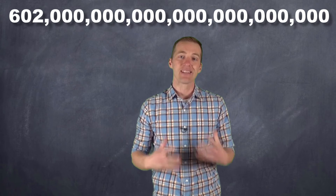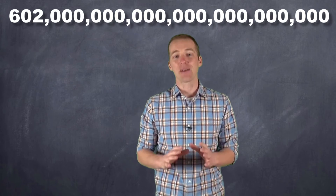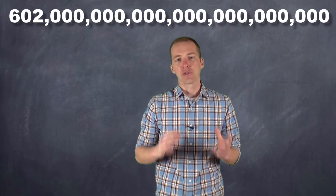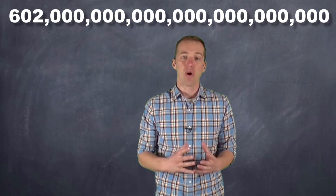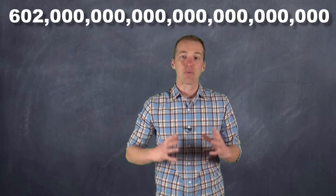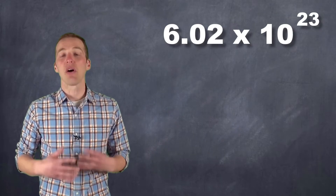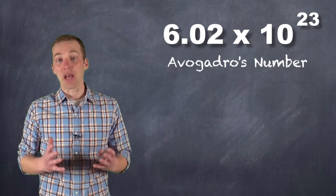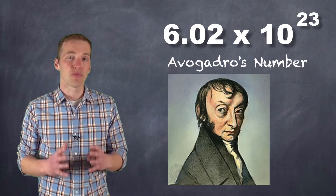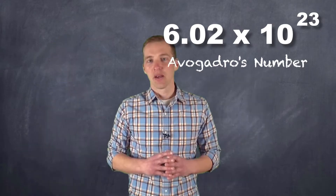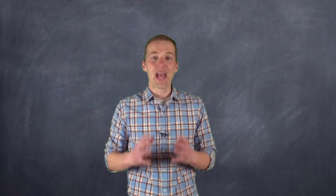Now, when we deal with a number this large, it kind of makes sense when you think about it, because atoms are extremely small. I think we've already talked about that. But they're so small that in order for them to be in a manageable quantity, we're dealing with a really, really, really large number of them: 6.02 times 10 to the 23. Something that we call Avogadro's number.